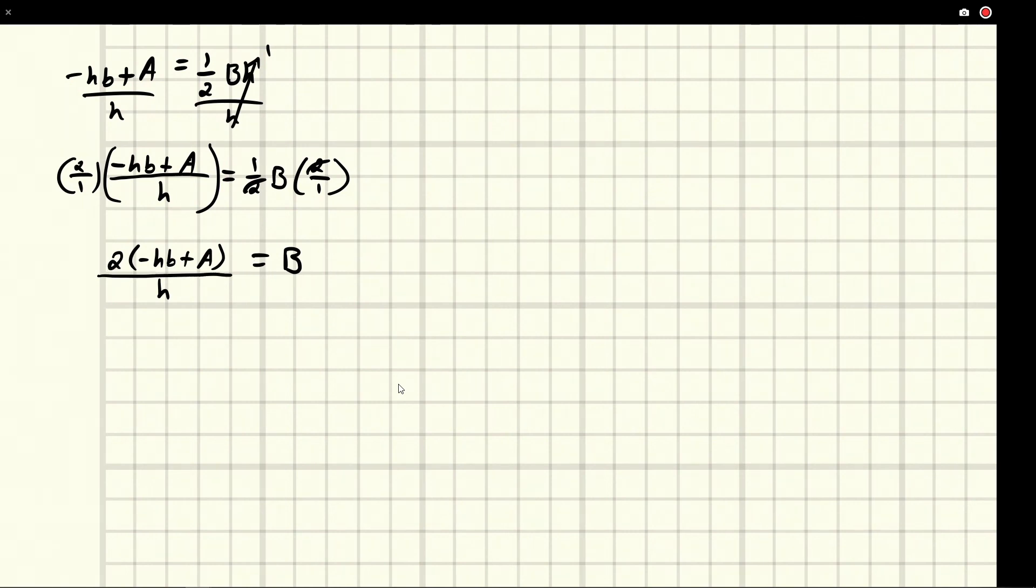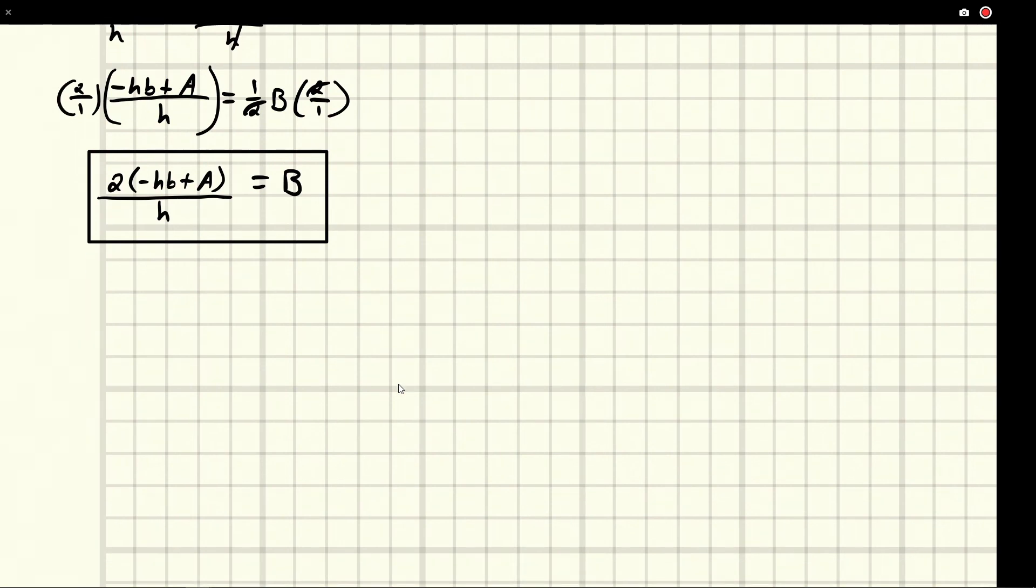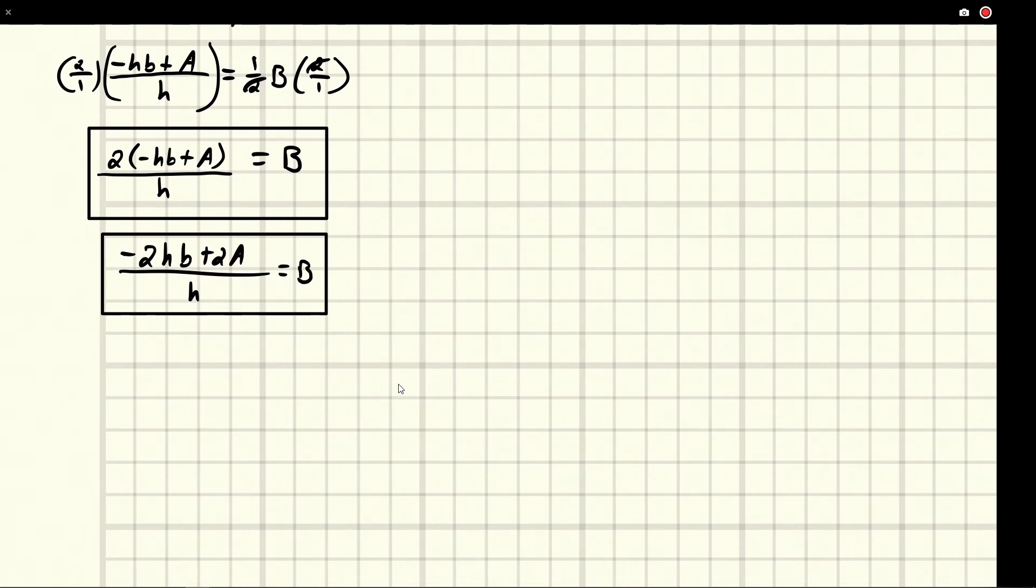At this point, this is our answer. Or, you can distribute the two in if you think it makes it look better: negative two HB plus two A all over H equals B. This would also be an acceptable form of the solution. You may have an instructor that has a certain way they want the answer presented, but they're equivalent statements.